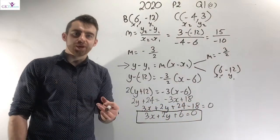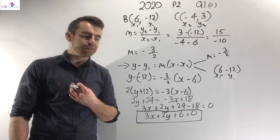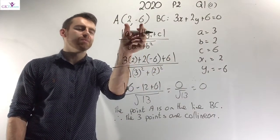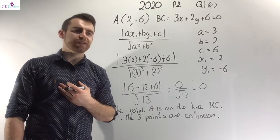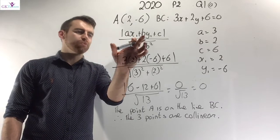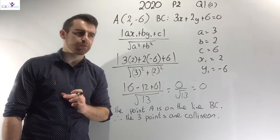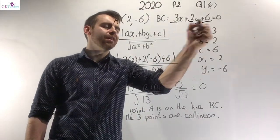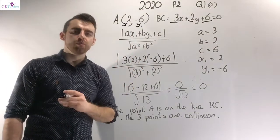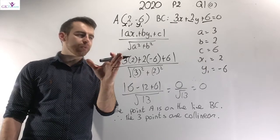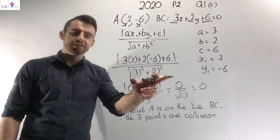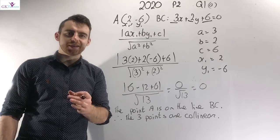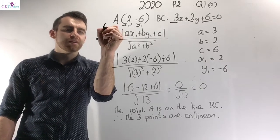Now I simply sub into the perpendicular distance formula to find the perpendicular distance from the line BC to the point A at (2, −6). On page 19 in the maths tables, the perpendicular distance formula is: ax1 plus by1 plus c, over the square root of a squared plus b squared — where a is the coefficient of x, b is the coefficient of y, c is the constant, and x1, y1 are the coordinates of the point. When I sub in all the values, the top of the fraction works out as 0, so the perpendicular distance is 0.